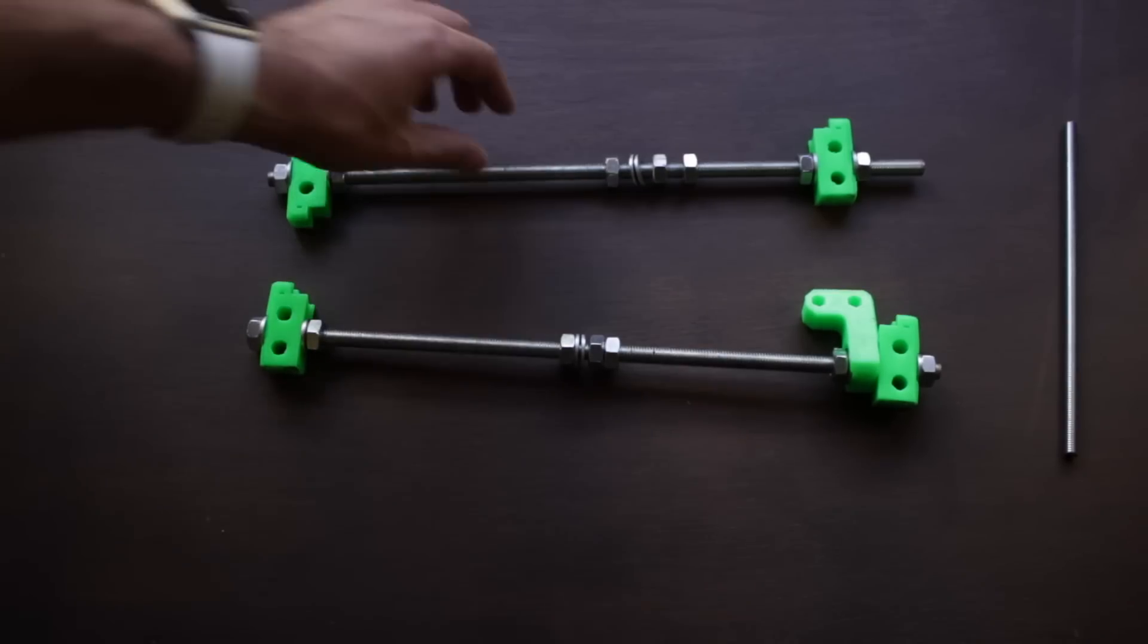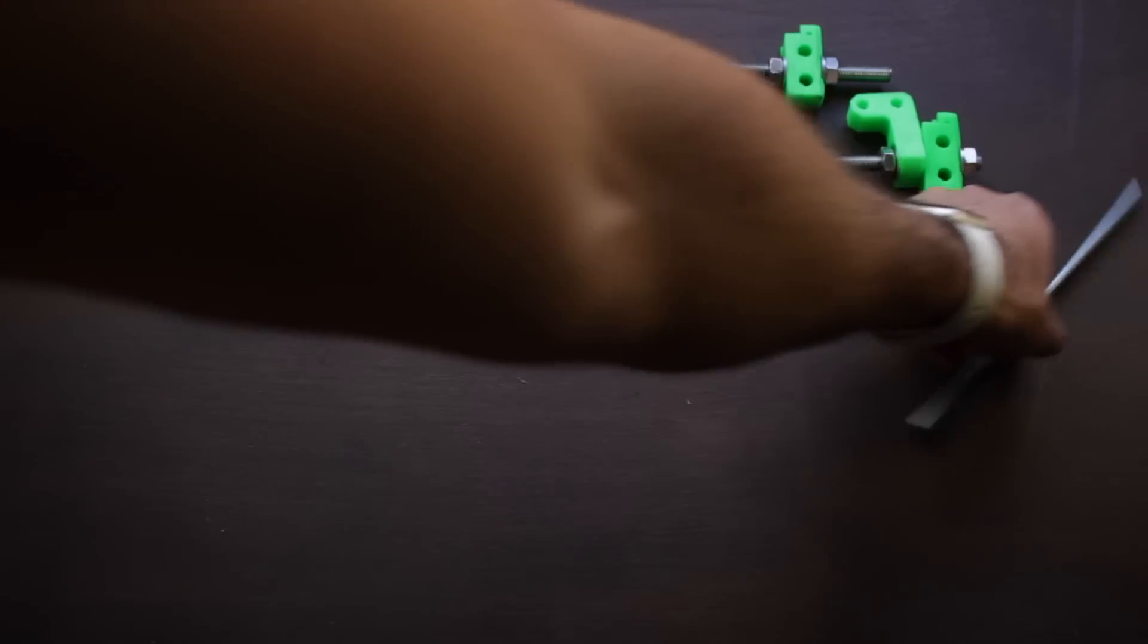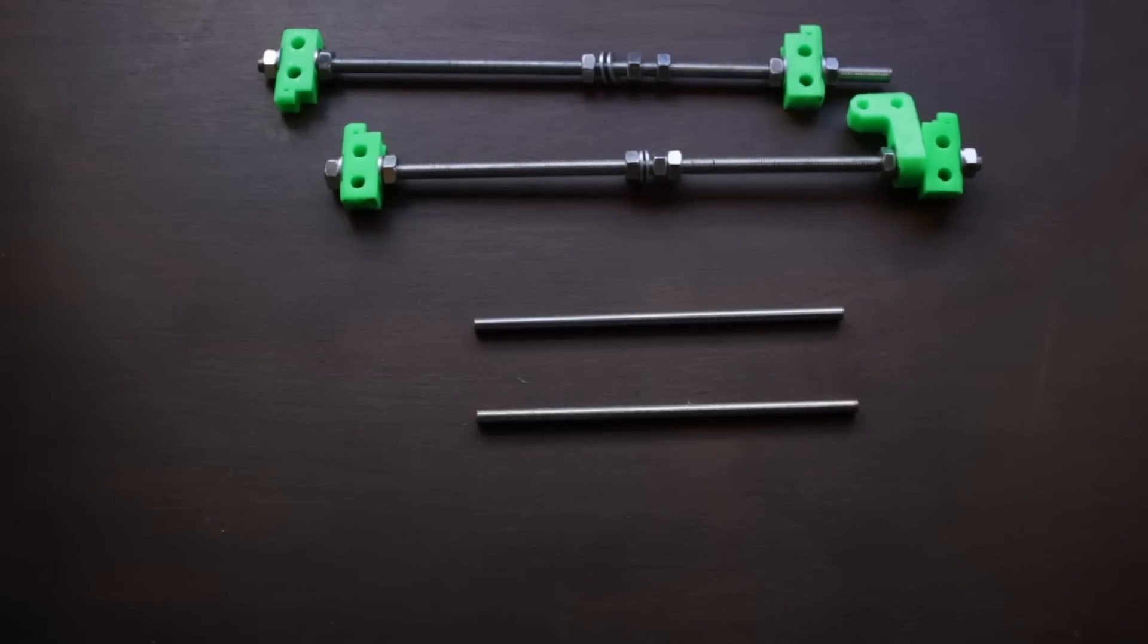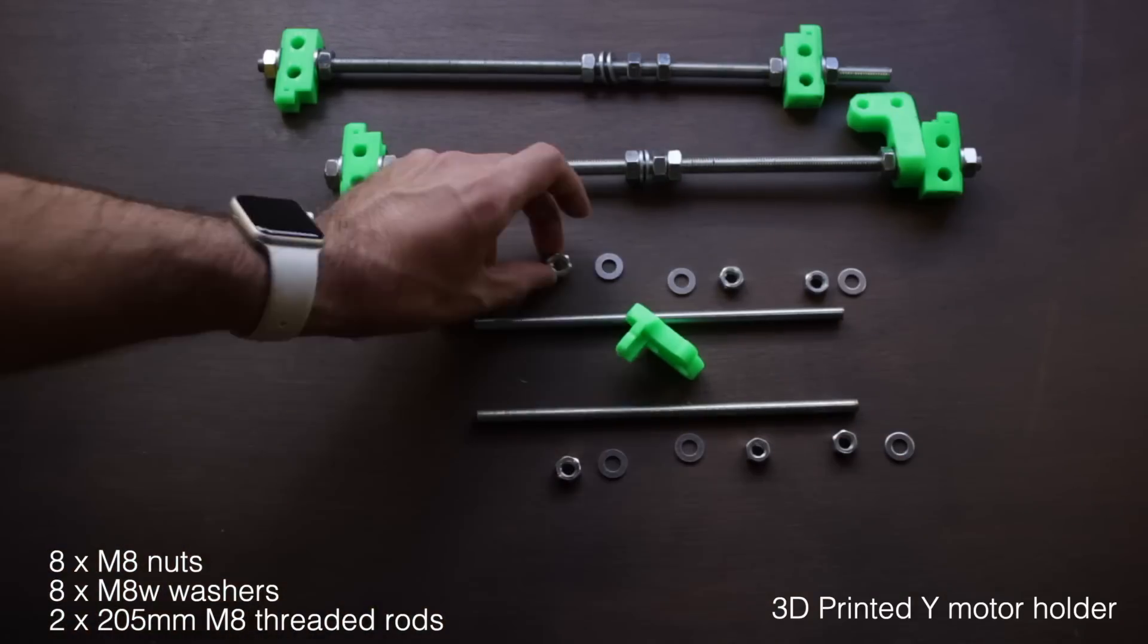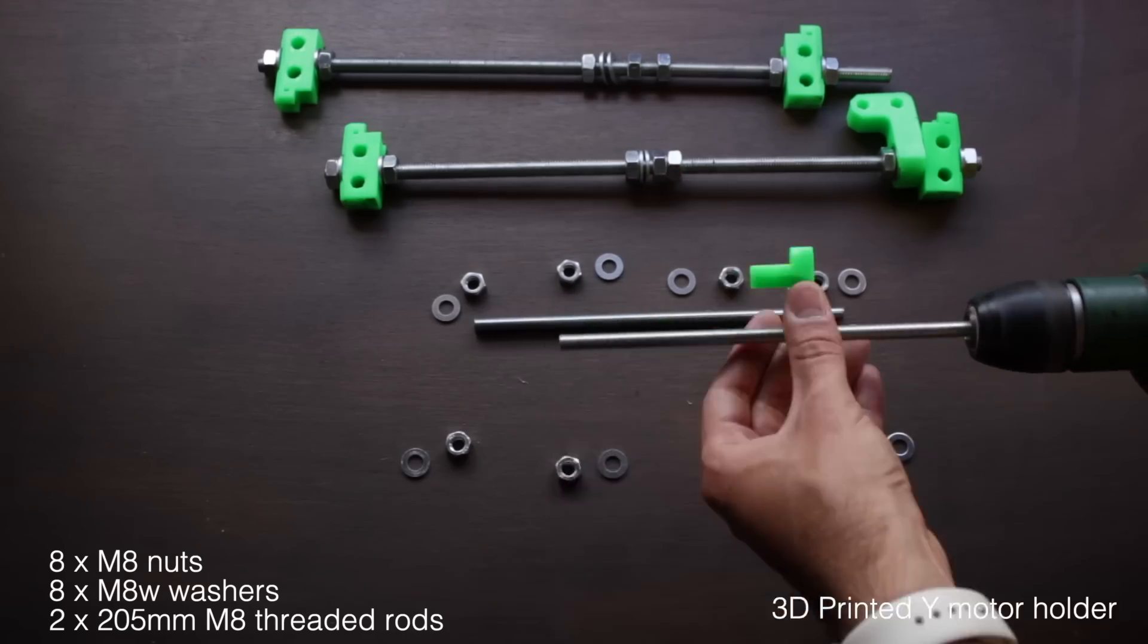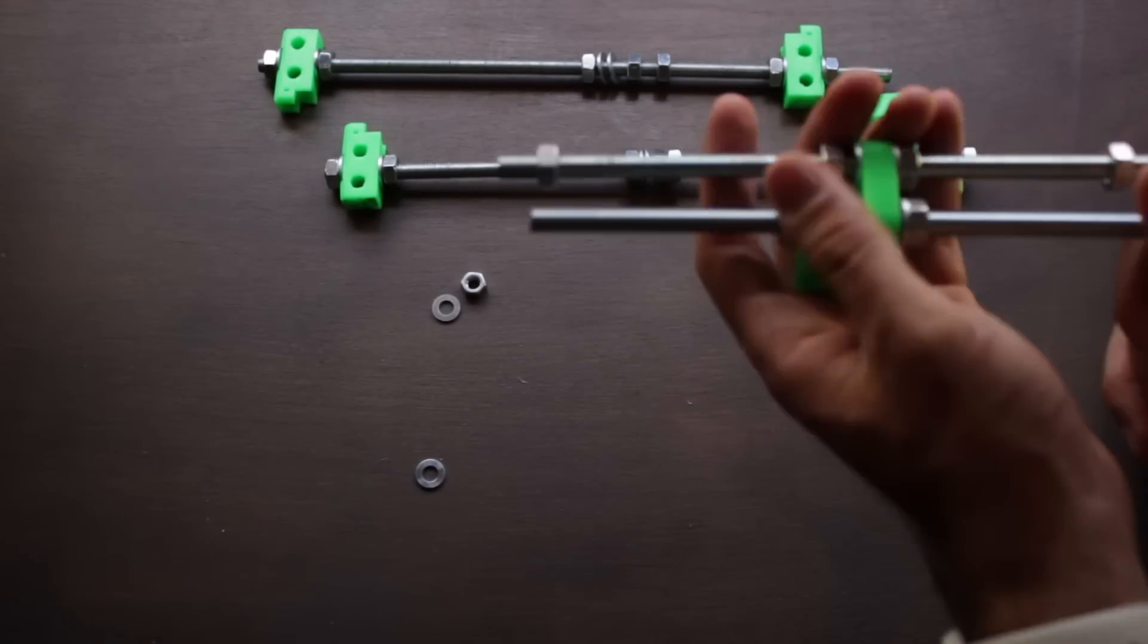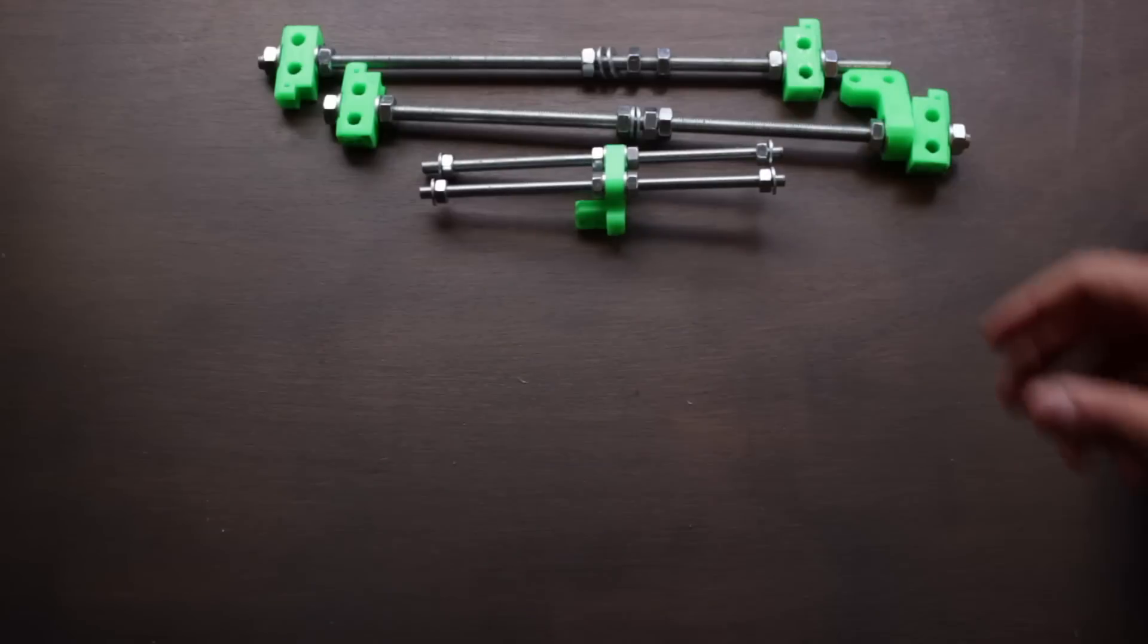Now it's time to jump to the M8 threaded rods. Actually we are going to work in pairs since we will use two M8 rods on the front and two in the back. So starting with the ones in the back, as well as with the M10 rods, we will need more components. One more time, keeping the exact same order that you can see on screen, we will need the Y motor holder printed piece, 8 M8 nuts, 8 M8 washers and the 2 M8 threaded rods. Now we will introduce everything in place using our electric drill at low speed, getting this nice result. Once it's done,